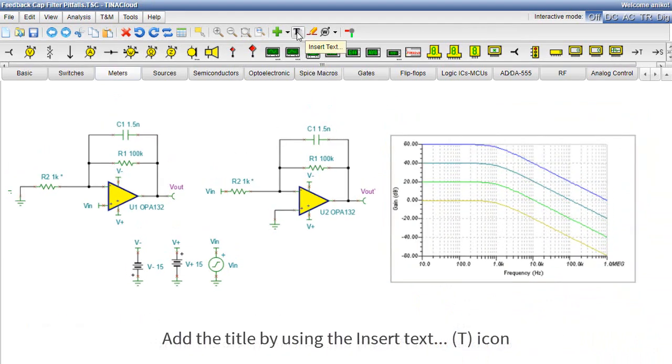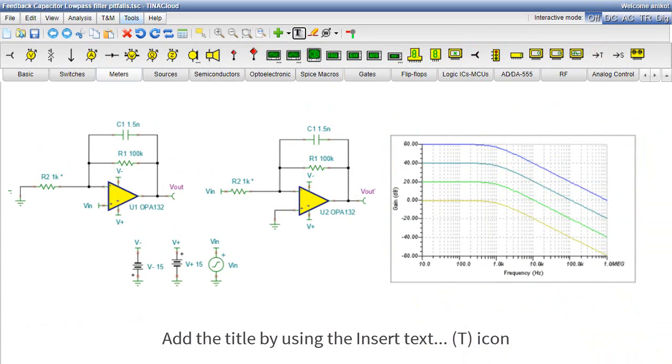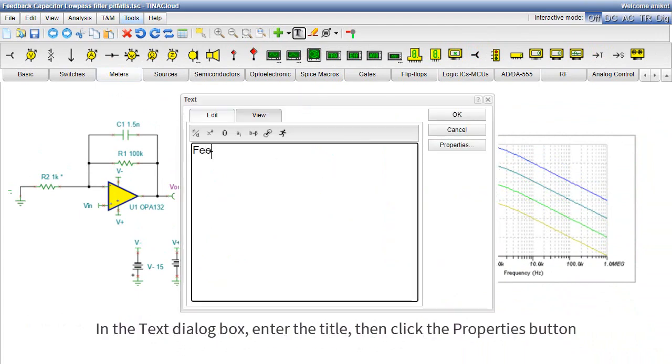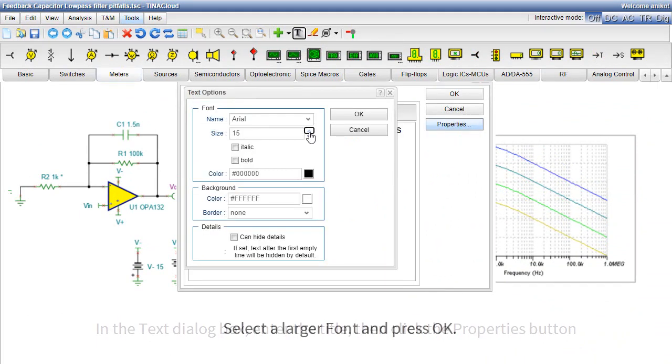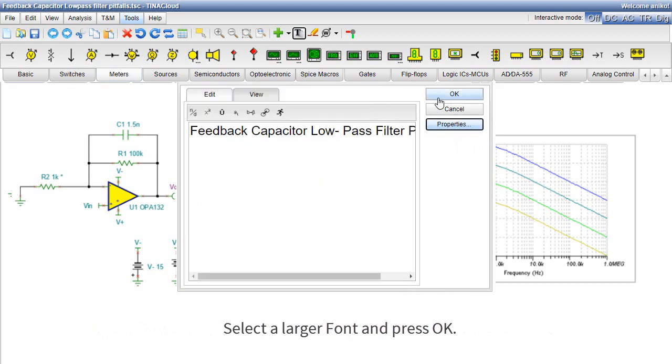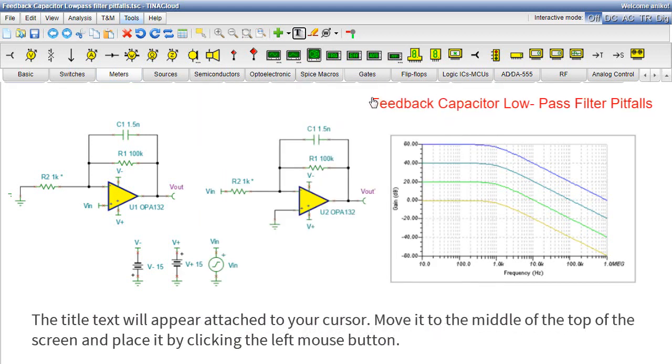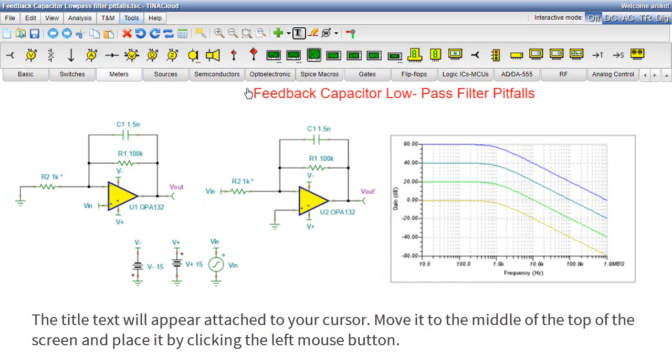Add the title by using the Insert Text icon. In the Text dialog box, enter the title, then click the Properties button. Select a larger font and press OK. The title text will appear attached to your cursor. Move it to the middle at the top of the screen and place it by clicking the left mouse button.